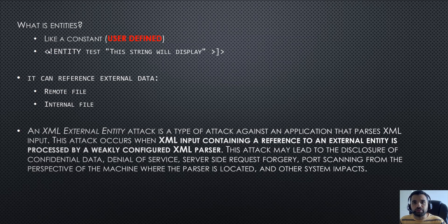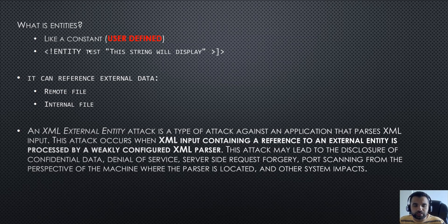Here's how you define a constant or an entity in XML. You have the entity keyword, then the name of the variable, and then the value. Whenever a developer or application uses this 'test' variable — and I'll show you how to make a reference to it — anywhere in the application it will be replaced by that string. It sounds simple: if you don't want to write the same string a thousand times, define it as a constant and use it.